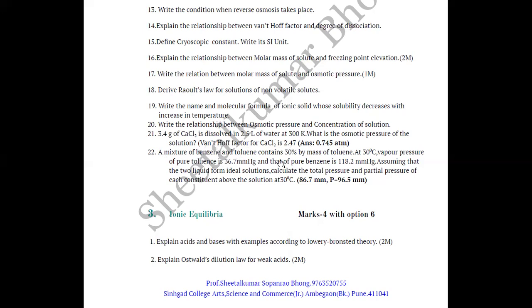Question 22: A mixture of benzene and toluene contains 30% by mass of toluene at 30°C. Vapour pressure of pure toluene is 36.7 mmHg and that of pure benzene is 118.2 mmHg. Assuming the two liquids form ideal solutions, calculate the total pressure and partial pressure of each constituent above the solution at 30°C. The total pressure answer is 86.7 mmHg and partial pressure is 96.5 mmHg. This is a textbook numerical.